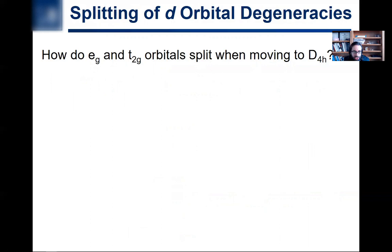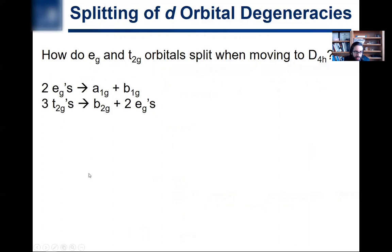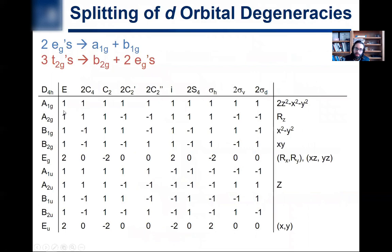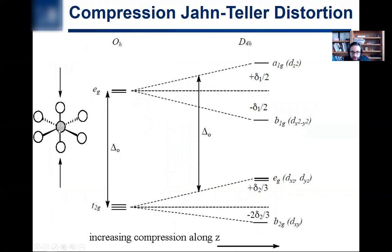When talking about the splitting of d orbital degeneracies as we move to D4H, you can figure this out from the character table. Looking at the D4H character table, what used to be T2g now becomes a B2g and two Eg symmetry labels, and what used to be Eg — the dz² and dx²-y² — now splits into A1g and B1g. You can draw a correlation diagram to explain the origin of this splitting, going from the octahedral diagram to the D4H diagram using the concept of Jahn-Teller distortion.